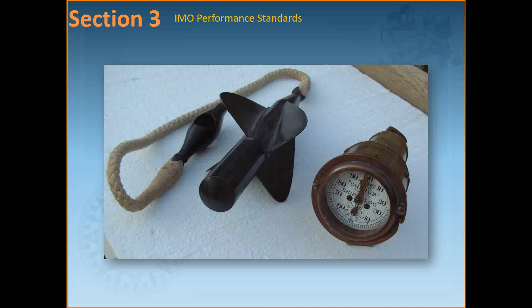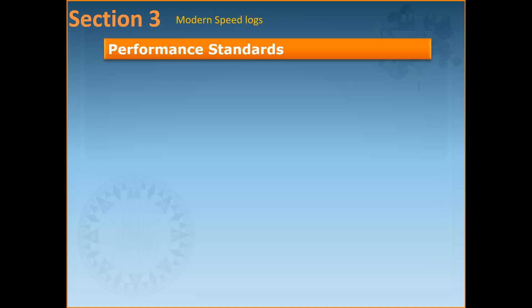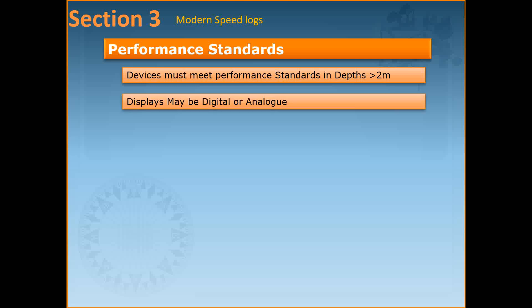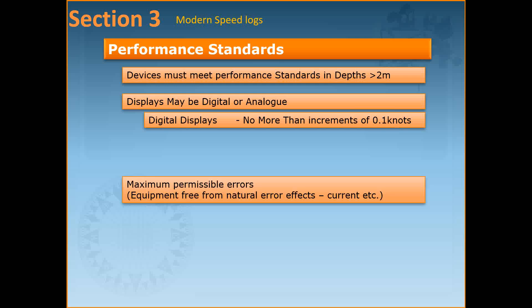Then we move on to the International Maritime Organization performance standards or the IMO performance standards. Devices measuring speed and distance over the ground should meet the performance standards in water of depth greater than 2 meters beneath the keel. Speeds may be presented in either analog or digital form. Where a digital display is used its incremental steps should not exceed 0.1 of a knot and analog displays should be graduated at at least every 0.5 of a knot and be marked with figures at at least every five knots.